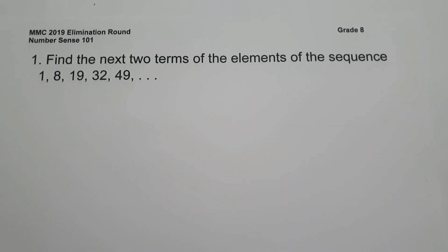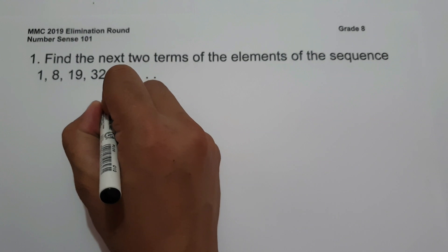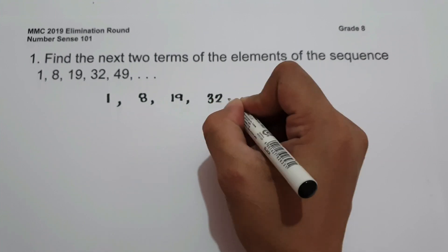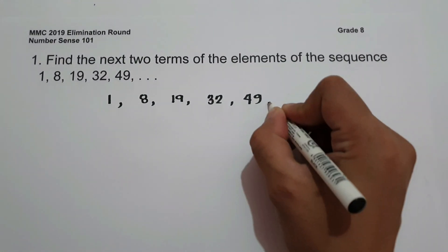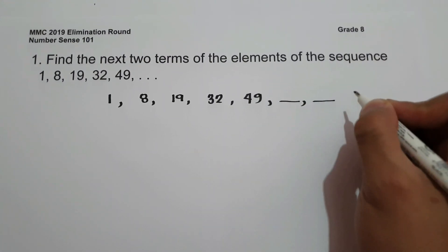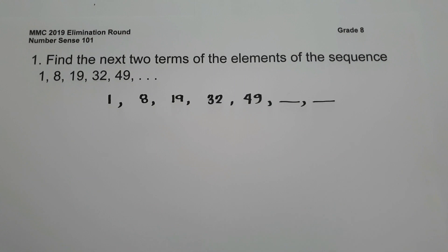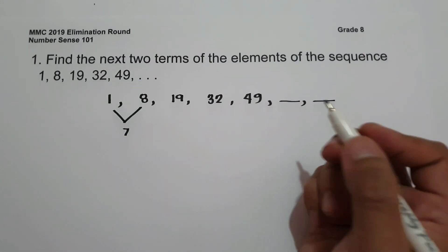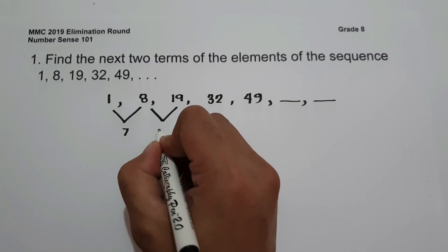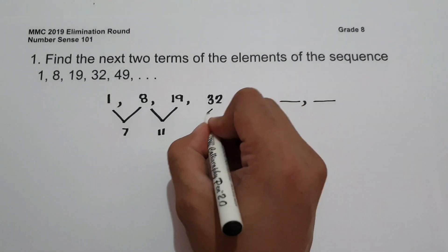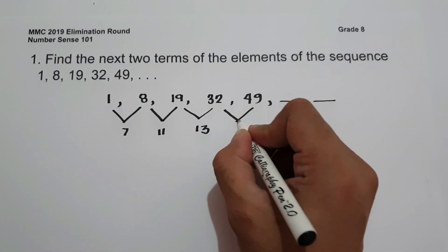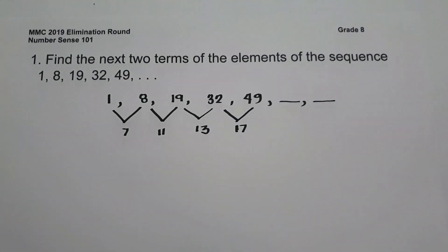Since the given sequence is an example of a quadratic sequence, to find the next two terms, we get the differences: 8 minus 1 is 7, 19 minus 8 is 11, 32 minus 19 is 13, and 49 minus 32 is 17.